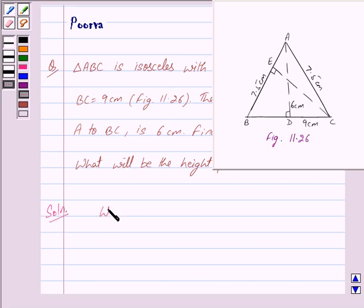We are given AD equals 6 cm and BC equals 9 cm.